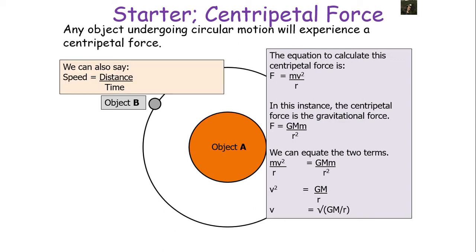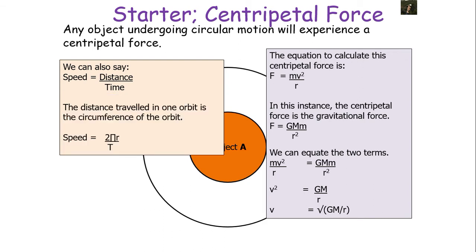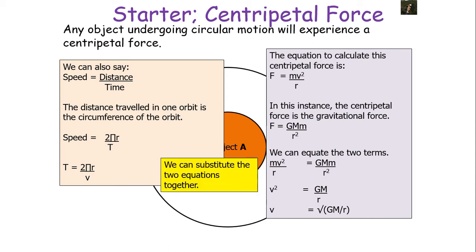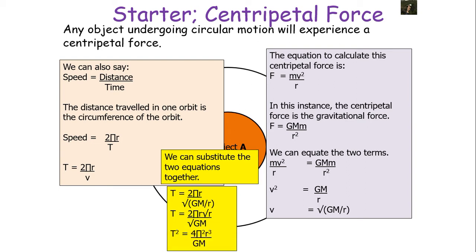We can also say speed equals distance over time. The distance travelled in one orbit is the circumference 2πr, divided by the time period T. So T = 2πr/v. Since v = √(GM/r), we can combine the two equations: T = 2πr / √(GM/r). Working through and rearranging gives us T² = 4π²r³ / GM.